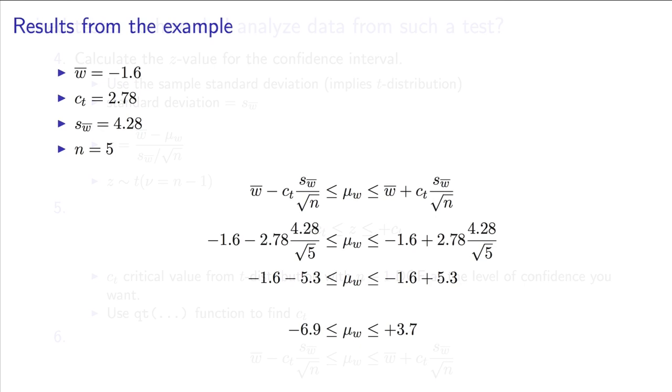Do your values agree with mine here? The lower bound is minus 6.9, and the upper bound was 3.7. I used the q-t function in R to get the critical t values of 2.78 with 4 degrees of freedom.